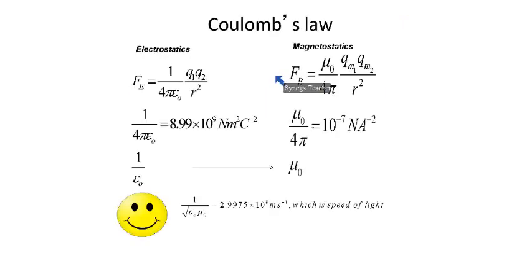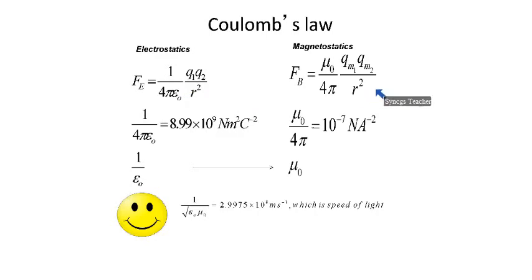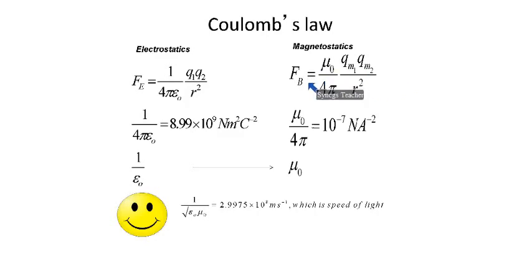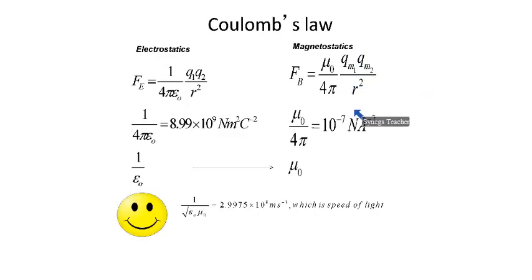Let us start with Coulomb's law. There are two Coulomb's laws — one is for electrostatics, the other is for magnetostatics. Coulomb's law for electrostatics states that the force of attraction or repulsion between two point charges is directly proportional to the magnitude of the charges and inversely proportional to the square of the distance between them. In magnetostatics, in the place of charge, we have pole strength. So the force between two poles is directly proportional to the product of their pole strengths and inversely proportional to the square of the distance between them.